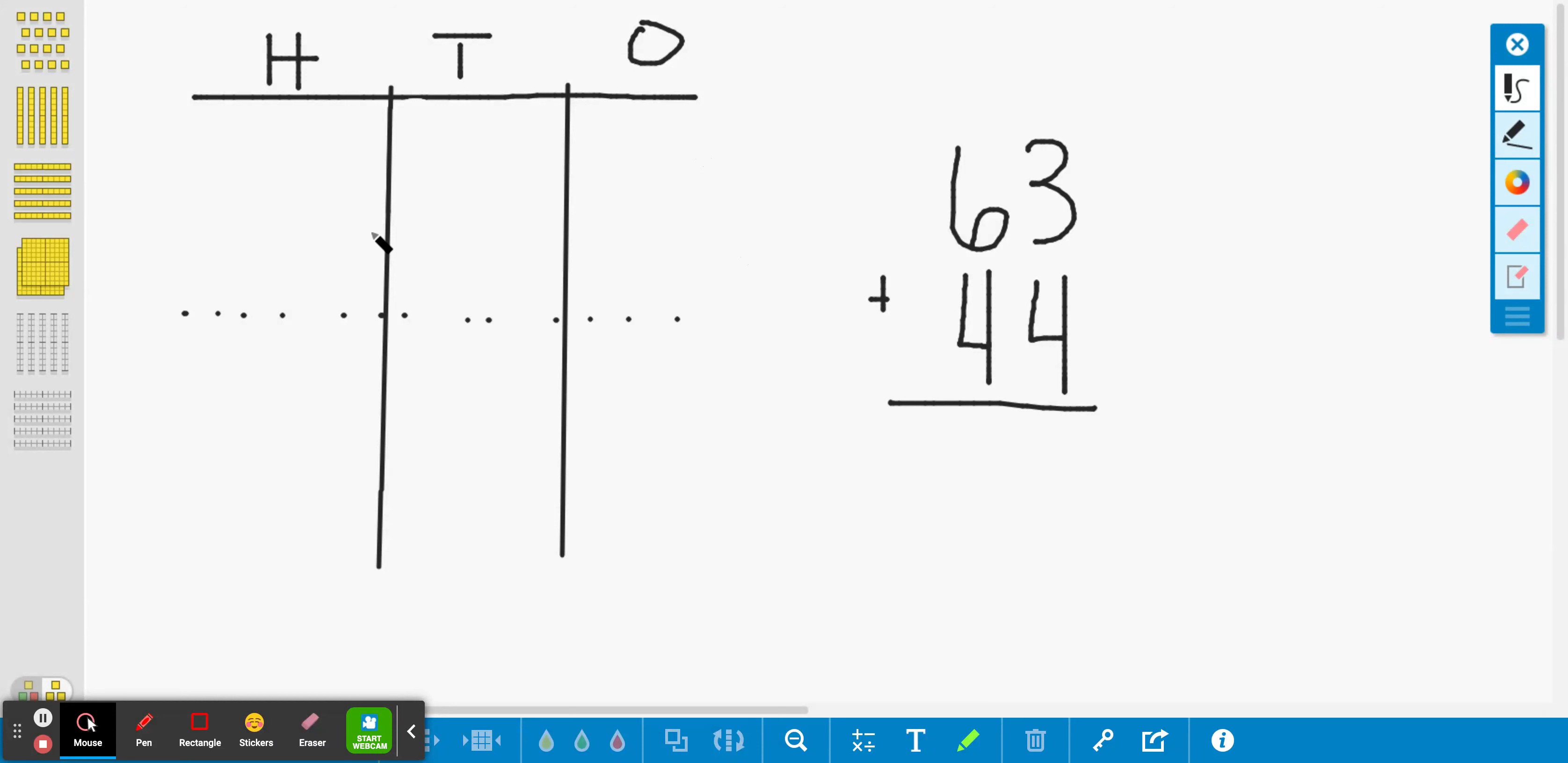I created here on my whiteboard, I stacked my numbers up, so I made them vertically, so my ones are stacked above my ones and my tens above my tens. And the next thing to note is that I made myself a little place value chart, and I did include hundreds, and I'll show you why in a minute.